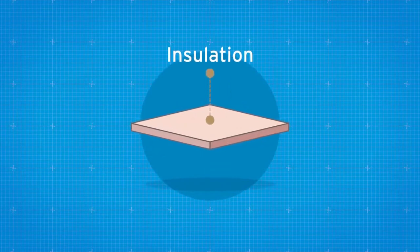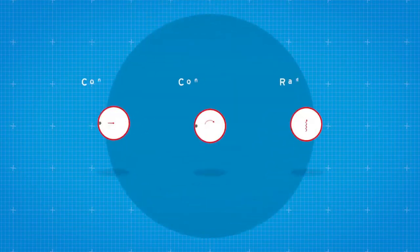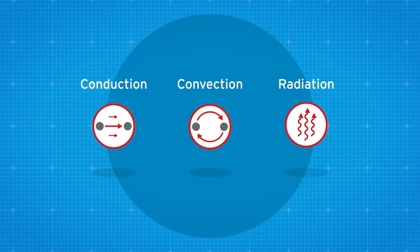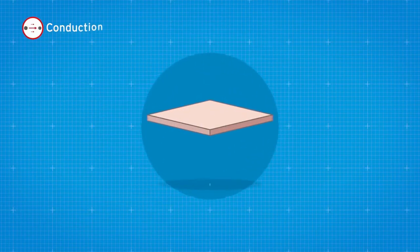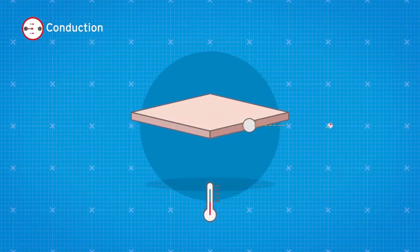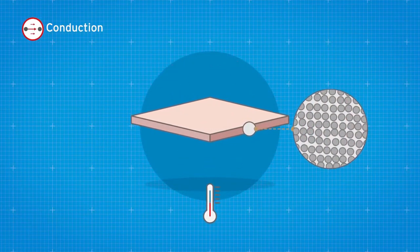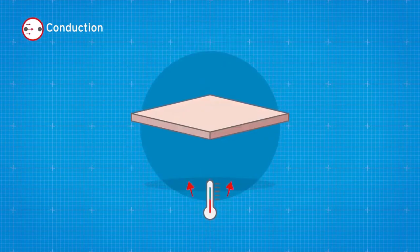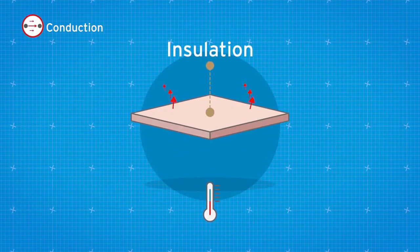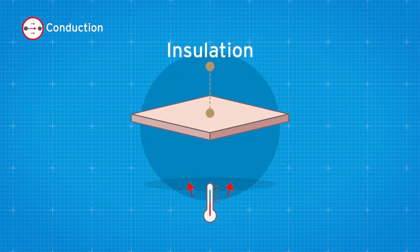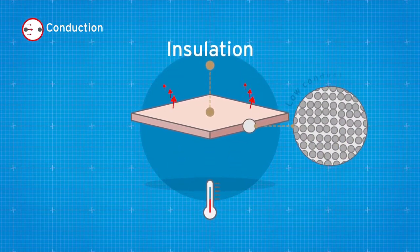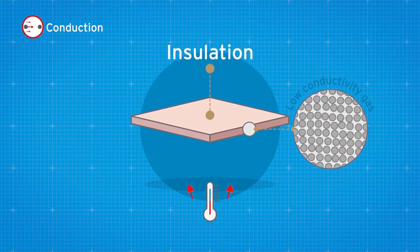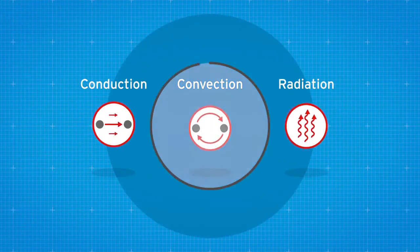Thermal insulation is designed to restrict and resist heat transfer via three mechanisms: conduction, convection and radiation. Conduction is how heat moves along or through a material by effectively being passed along from one molecule to another. It can take place in gases, liquids or solids. The ability of a material to conduct heat depends on the material. Using a low-conductivity gas in insulation rather than just air further helps to reduce conduction.